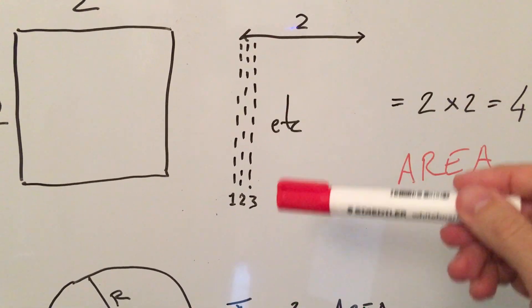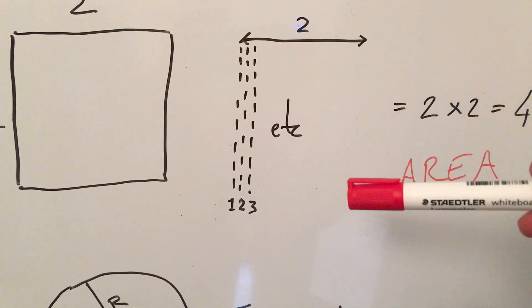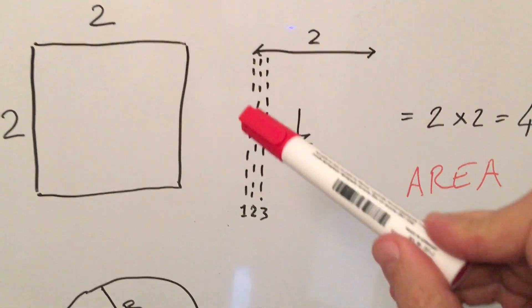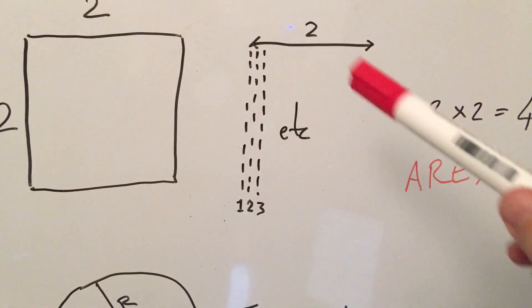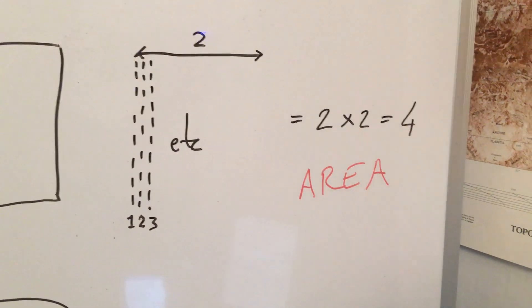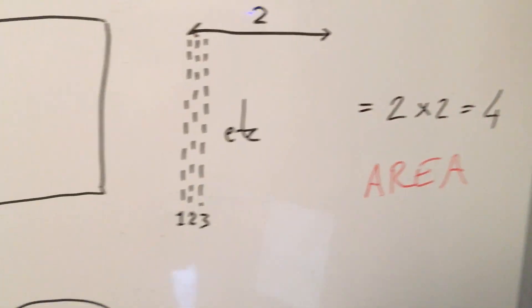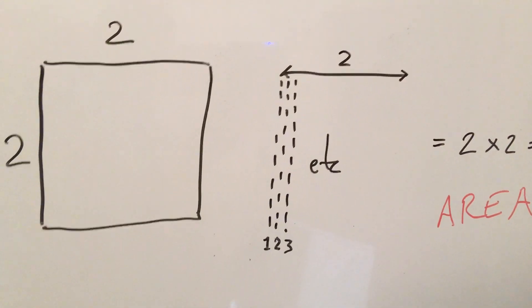You could think of it as painting the area with little lines, and that's basically what you're doing. You're multiplying this length by that length until the whole thing is filled in. And that gives you, in this case, two by two is four, which is the area. So, easy enough to get, right?